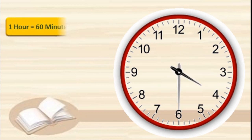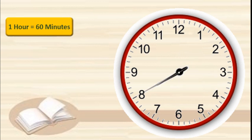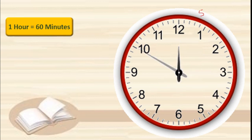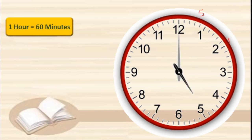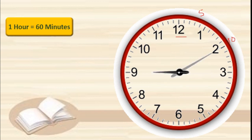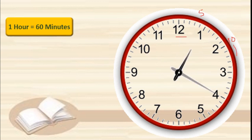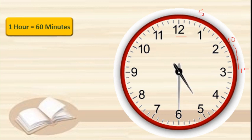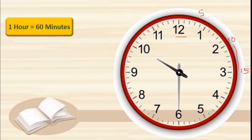When the minute hand takes one full round of 360 degrees, then the hour hand changes its position to one digit. One hour is equal to 60 minutes. From 12 to 1 it is 5 minutes, from 1 to 2 again 5 minutes — that is 10 minutes. We always start counting the minutes from 12. Total it is 60 minutes, so one hour is equal to 60 minutes.